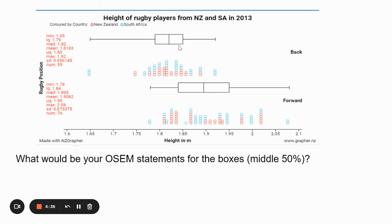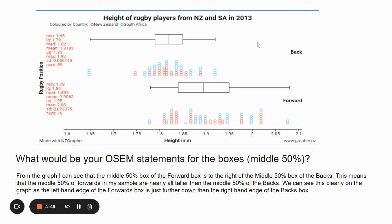For the middle 50% — that's the length of the box — we're interested in where these boxes are positioned on the graph. From the graph I can see that the middle 50% box of the forwards is to the right of the middle 50% box of the backs. This means the middle 50% of the forwards in my sample are nearly all taller than the middle 50% of the backs. We can see this clearly as the lower quartile of the forwards, 1.84, is just lower than the upper quartile of the backs, 1.85.